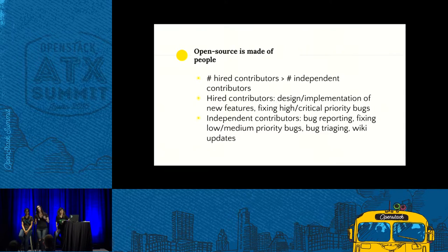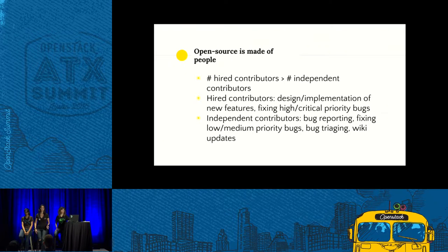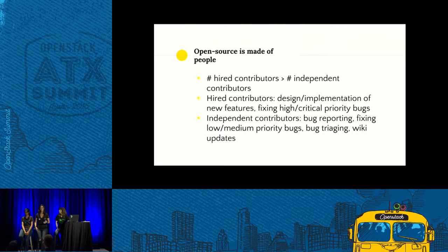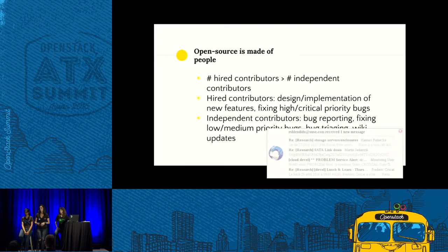How are tasks in open source projects split? Higher contributors have more time and resources, so they usually take on core feature development and work on fixing critical or high priority bugs in OpenStack. What's left for people working independently in their free time? They contribute with bug reporting, bug fixing for medium and low priority bugs, changing the wiki, documentation, and small changes like translation.